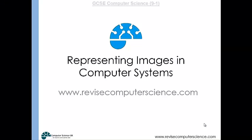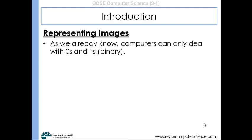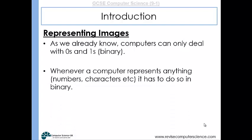This video will take a look at how images are represented in computer systems. CPUs can only deal with two states — they're made up of switches and therefore can only represent 0 and 1, hence the binary number system. When any data is to be processed, whether it's characters, sound, or images, the computer can only process that data if it is first converted into binary numbers.